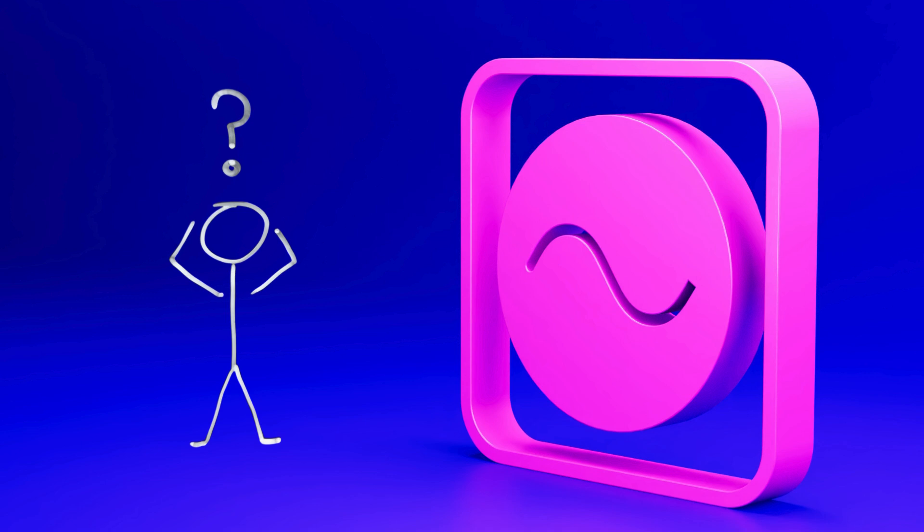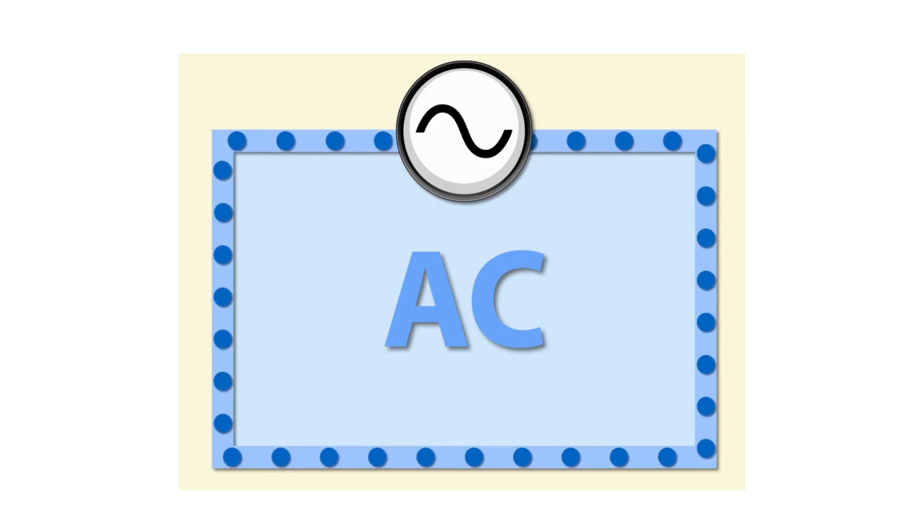What is alternating current? Simply put, AC is a type of electricity in which the current changes its direction of flow periodically.